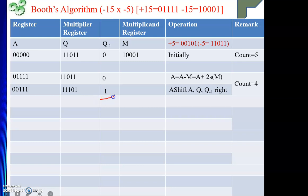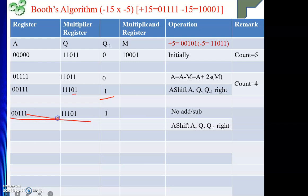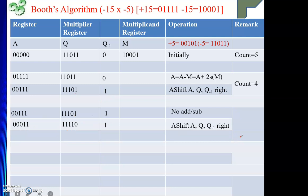Now for the next cycle: Q0 is 1 and Q minus 1 is also 1. If two consecutive bits are the same, I do not need to perform addition or subtraction. So I simply copy the values of A, Q, and Q minus 1. After that, I perform arithmetic shift right, giving triple 0, double 1, and the shifted Q value. One cycle is over and count is decremented to 3.